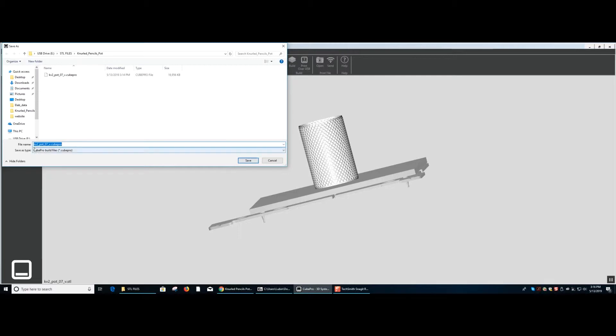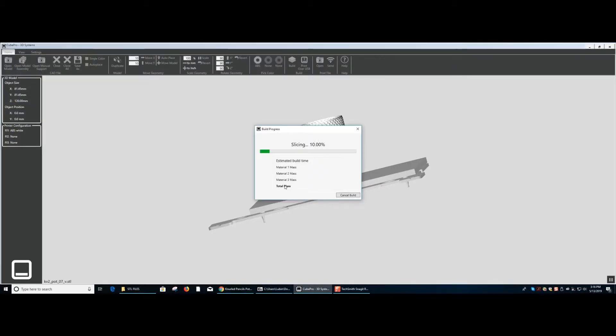You then want to save your STL and cube profiles back onto the USB drive as seen here. Now, the build progress is slicing the object and finalizing it for the 3D printer.